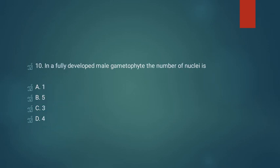Question number ten: in a fully developed male gametophyte, the number of nuclei is. Option A: one. Option B: five. Option C: three. Option D: four. This is a direct question — in a fully developed male gametophyte, three nuclei are present. Option C is the correct answer.